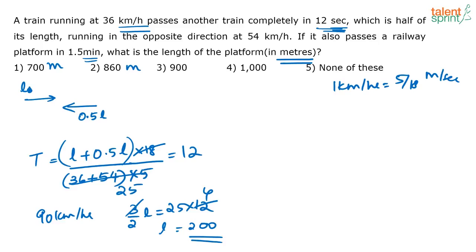Now what is the question? If it also passes a railway platform in 1.5 minutes, so the train who has a length 200 is passing a platform whose length is LP in how many minutes? In 1.5 minutes. What is the speed of the train? The speed of the train is 36 km per hour. Again, 36 km per hour is how many meters per second? 10 meters per second.